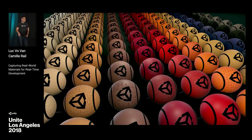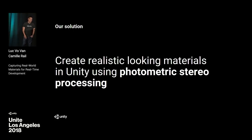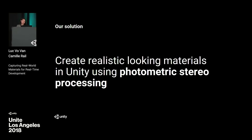You'll have a copy of this presentation. We'll go pretty fast because there's a lot of things to cover. We wanted to create realistic-looking materials in Unity using photometric stereo processing — it's another method for saying photometry.